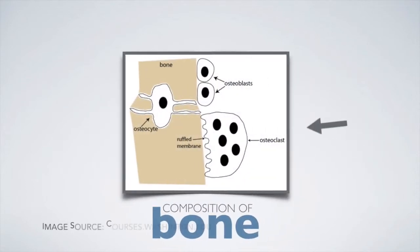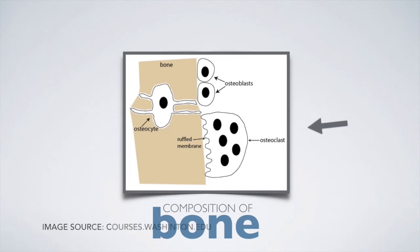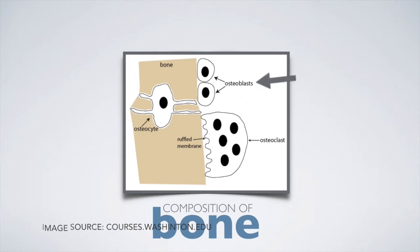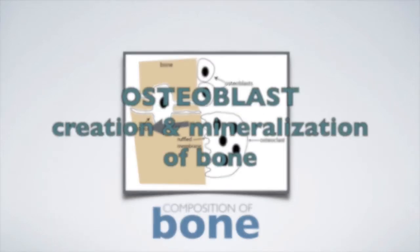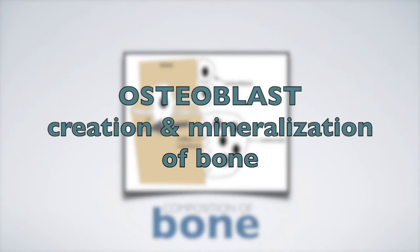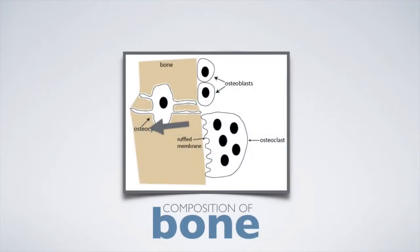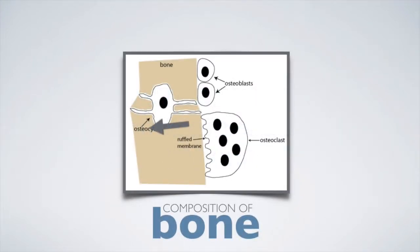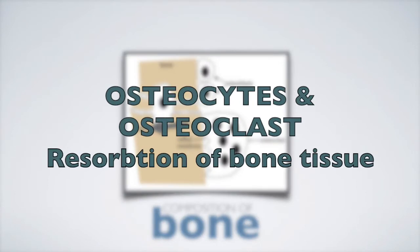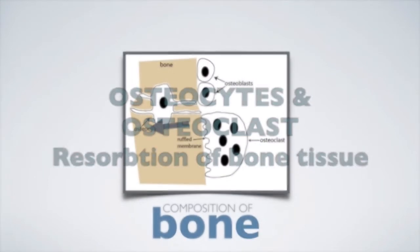The bone is composed of three types of cells: osteoclast, osteoblast, and osteocytes. Osteoblasts are responsible for the creation and mineralization of bone tissue. Osteoclasts and osteocytes are involved in the resorption of bone tissue.